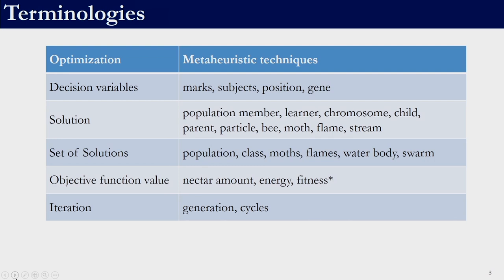Fitness in particular usually means objective function value except for a few algorithms. In ABC, fitness does not necessarily exactly correspond to the objective function value — we will come to it later — but most of the algorithms use the terminology fitness to indicate the objective function value. Iterations are also known as generations or cycles in metaheuristic techniques.